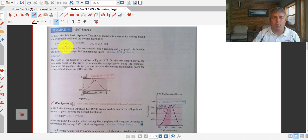So here's a sample problem in which we're evaluating the SAT mathematics scores, and our function y equals .0034e raised to the negative (x minus 514) squared, all divided by 27,848, for x's between 200 and 800. The x's here are our mathematics scores on the SAT.